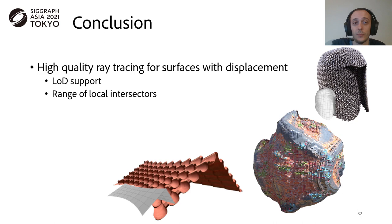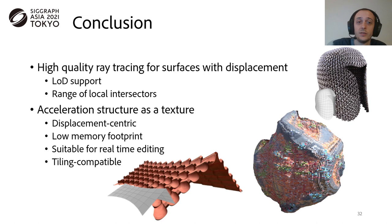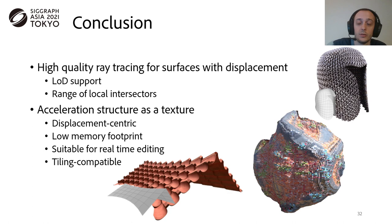In conclusion, we propose a method for high-quality ray tracing of surfaces with displacement, that supports level of detail and a range of local intersectors. The method is based on an acceleration structure, which is simply a texture, and is displacement-centric. It has a low-memory footprint, and is suitable for real-time editing, and is fully tiling compatible. So, thank you for your time, and I will be happy to answer questions about this work.